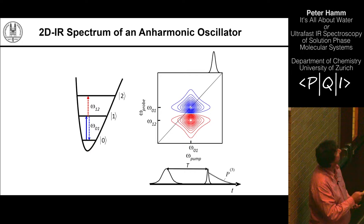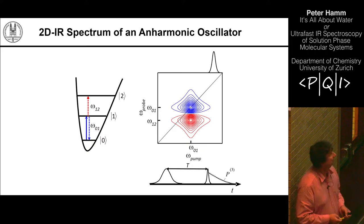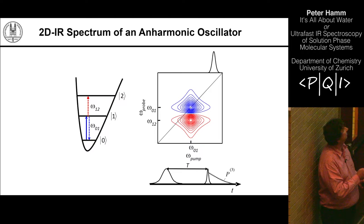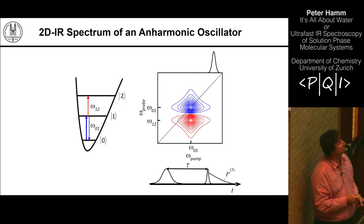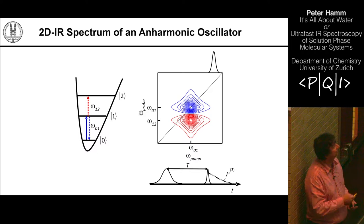Whenever the pump pulse is resonant with the 0→1 transition of a vibrational mode, it will excite it. The probe pulse comes a little later, after a time T — often called the waiting time. The probe pulse then has essentially two possibilities: going back down by stimulated emission, or going up the ladder from the 1→2 level. Since this oscillator is slightly anharmonic, these two frequencies are slightly different, giving rise to two peaks in the 2D spectrum: one from the 0→1 transition and one from the 1→2 transition.